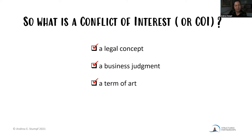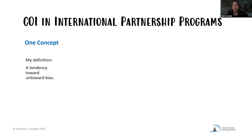I also view it as a term of art because it's not very straightforward — it's not just looking at the conflict of one thing to another. There's more nuance, more baggage. So really it's all of these things. To be more specific, in the international partnership program environment, conflict of interest beyond being a pure matter of conflict is usually a matter of bias. It's not the conflict itself that is so critical — it's the propensity for bias in decision-making. My definition is a tendency toward untoward bias — untoward meaning improper or inappropriate.